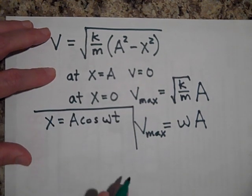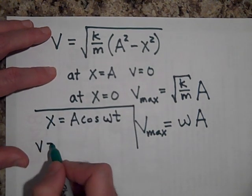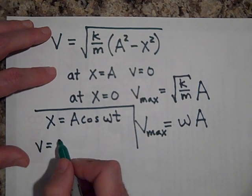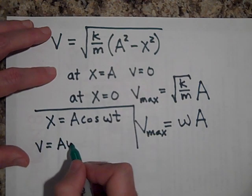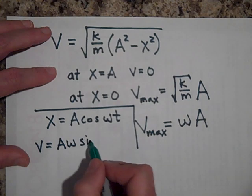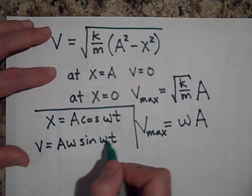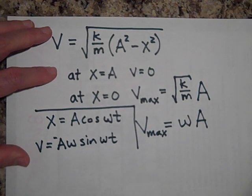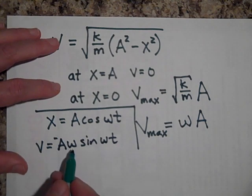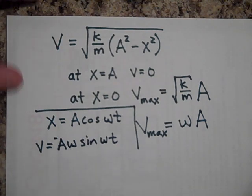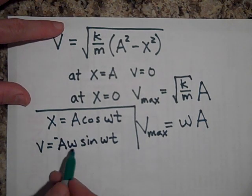Remember doing this? Then the derivative of this is A omega sine omega T. And I put a negative sign there. So we already knew that that was A max. Or excuse me, V max.